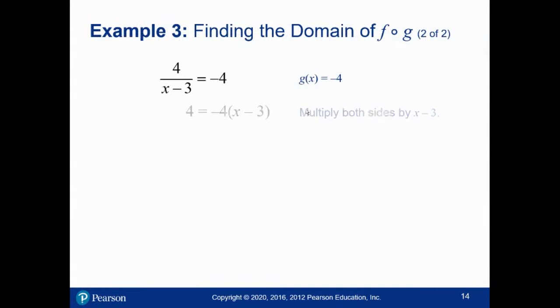Well, if you set g(x) equal to -4, multiply both sides by x - 3, distribute, subtract the 12 to the other side and divide by -4, and you get out x equals 2. So if x equals 2, I can plug that into g just fine.